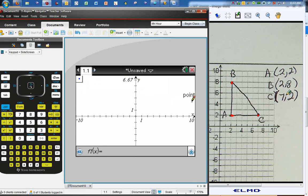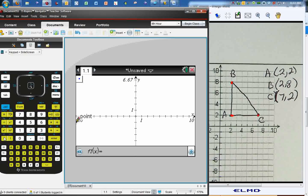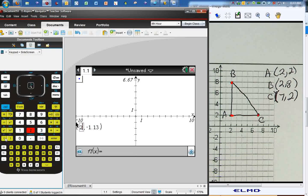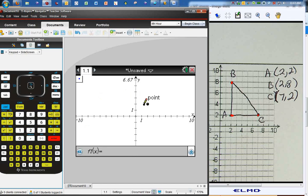2, 2, 2, 8, and 7, 2. To enter the coordinates, we open up the parentheses. We type the first coordinate. We hit enter. We type the second coordinate. We hit enter. And there's the point, 2, 2.